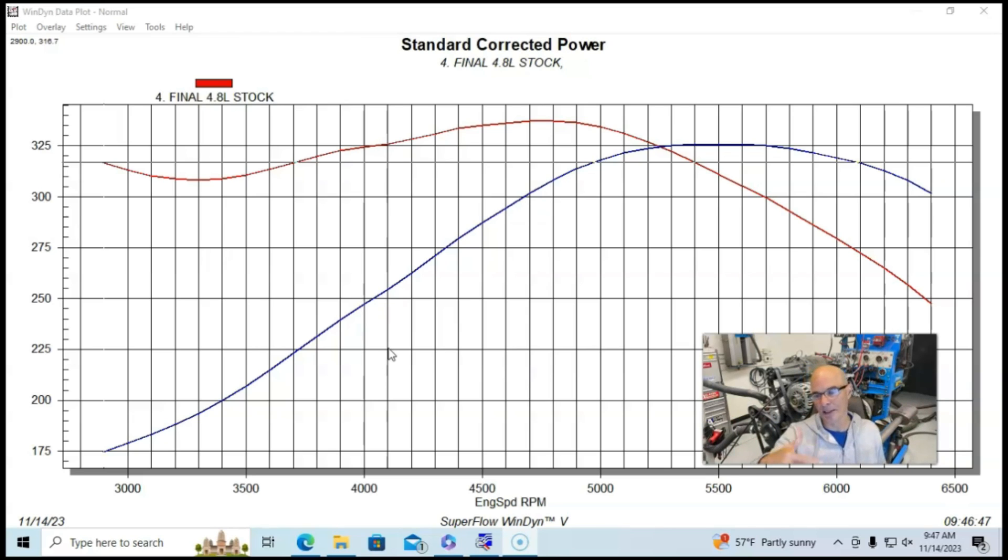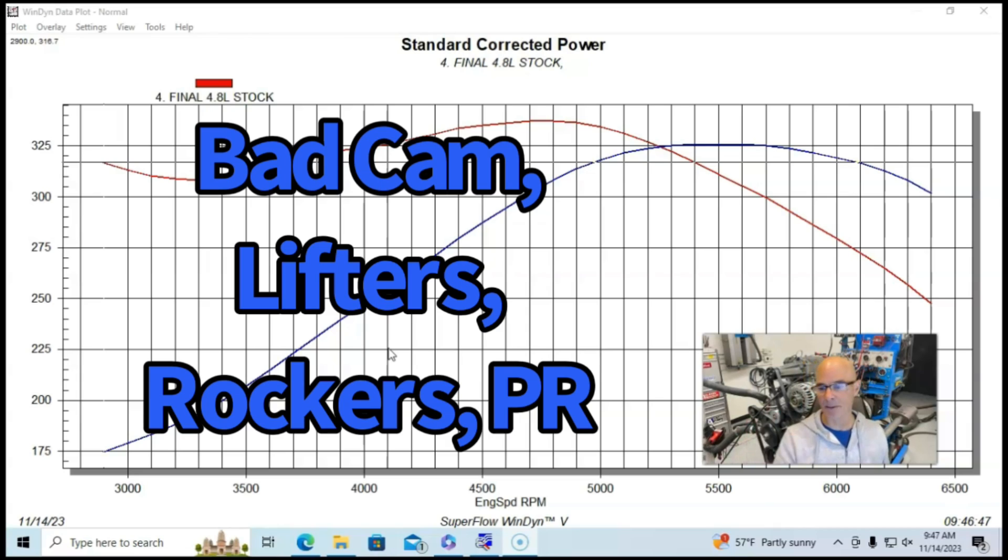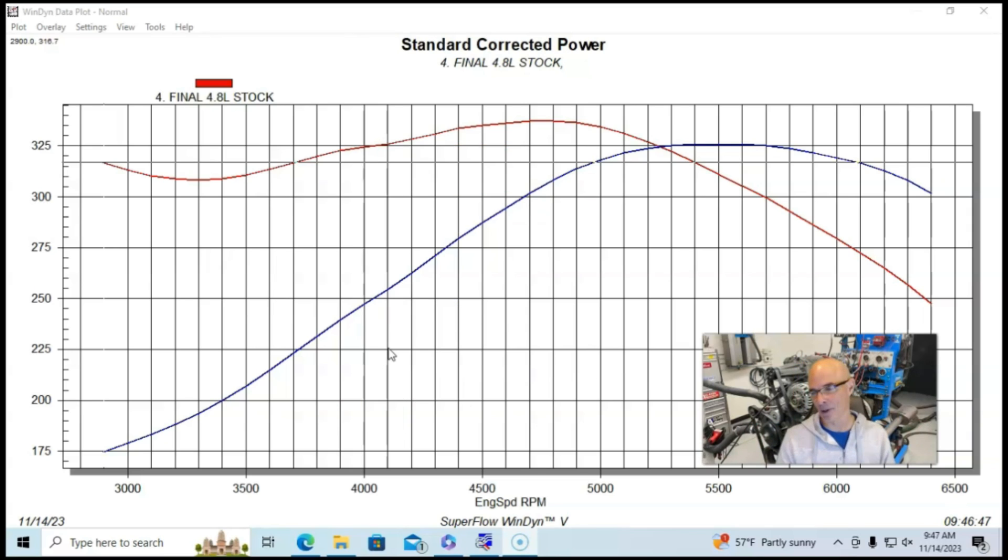We want to show you how the 4.8 liter, this particular one, started out. This was a wrecking yard motor that I had a ton of problems with. Actually it had a couple bad cam lobes, a couple bad lifters, the lifters had rotated in the trays, it had a couple bent push rods. The guy tried to glue a rocker back on because he had broke the stud, so it had all kinds of problems.